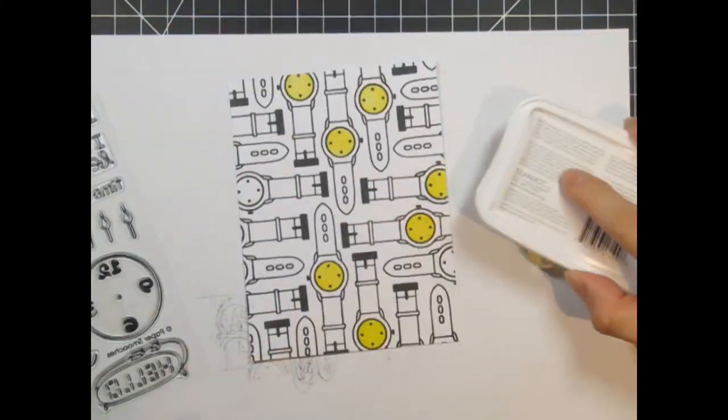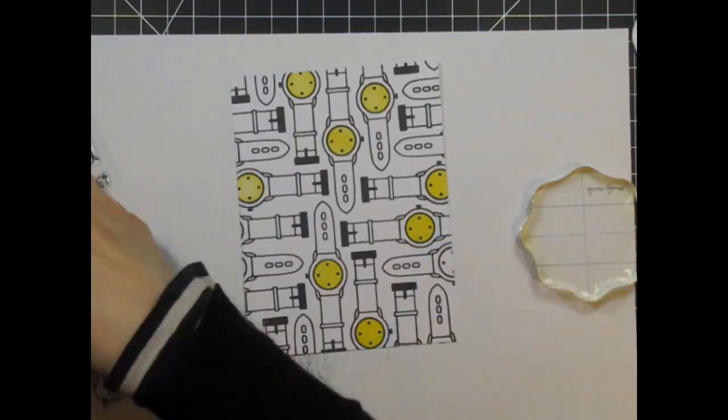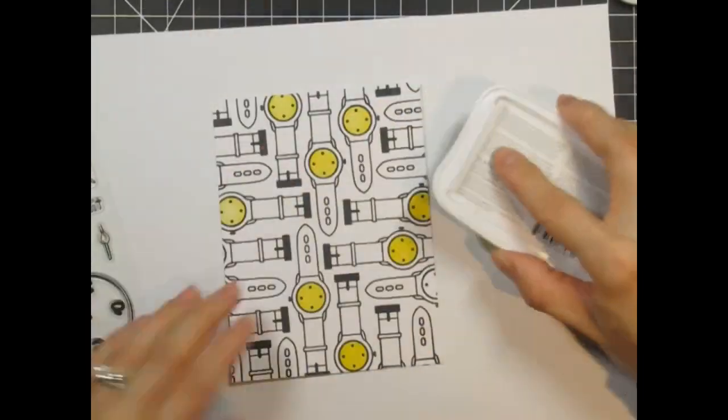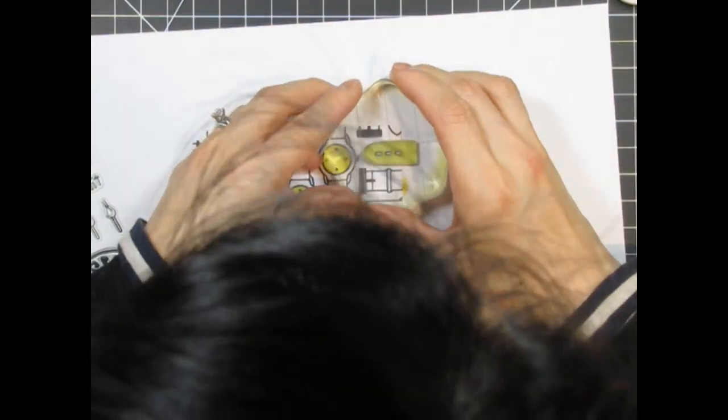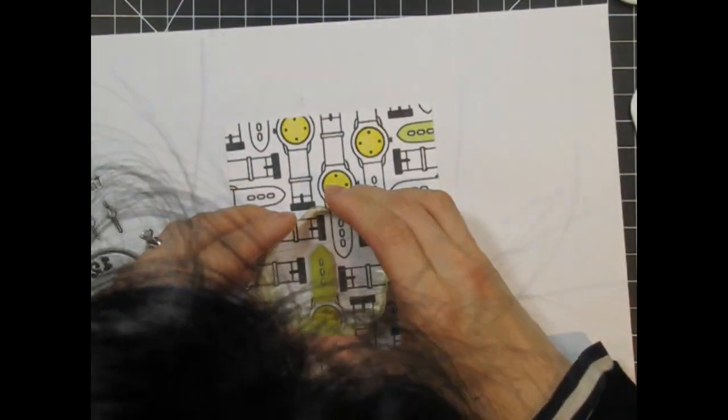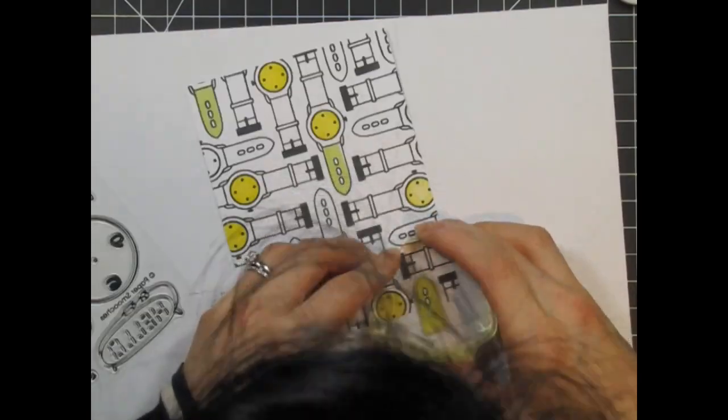Next, I take Pear Tarte, Rosebud, and Bahama Blue to give color to the bands. These inks give the smoothest coverage, and I find that they work better when I take the stamp pad to the stamp instead of pressing the stamp onto the ink pad.